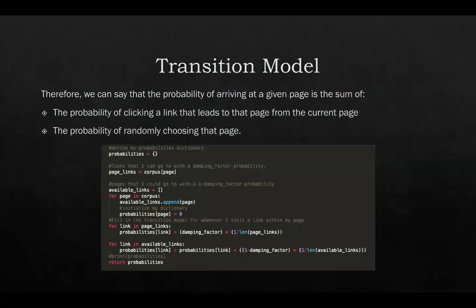And why is this important? Well, this is important because in our transition model, then we can state that the probability of arriving at the given page is the sum of these two options. So the probability is given by the probability of clicking a link that leads to that page from the current page and the probability of randomly choosing that page, which is why in the code below is represented as a sum. So first of all, we calculate the probability of choosing that page from a link in the current page, and then we add the probability of one minus damping_factor times the probability of choosing that page at random.